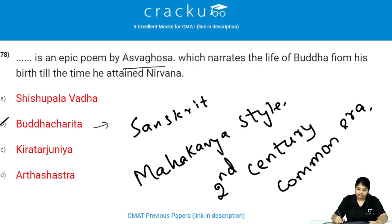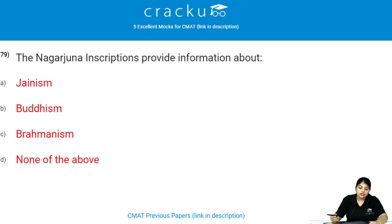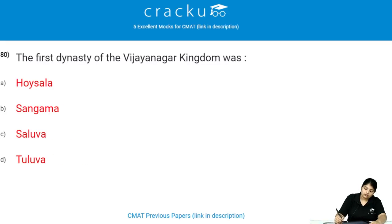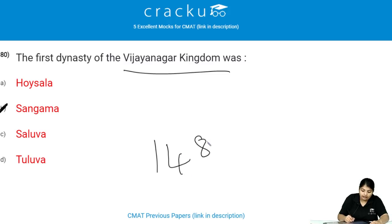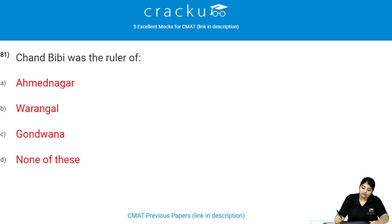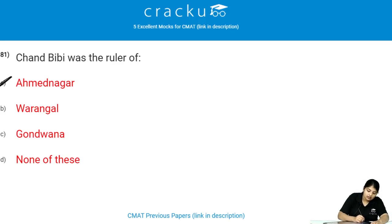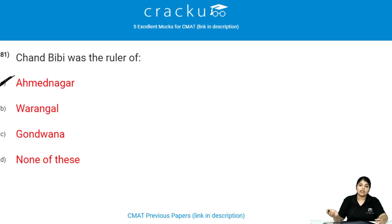The Nagarjuna inscriptions provide information about Buddhism. The first dynasty of the Vijayanagara kingdom was the Sangama dynasty, which lasted until 1485. Chand Bibi was a ruler of Ahmednagar; she was best known for defending Ahmednagar against the Mughal emperor Akbar in 1595.